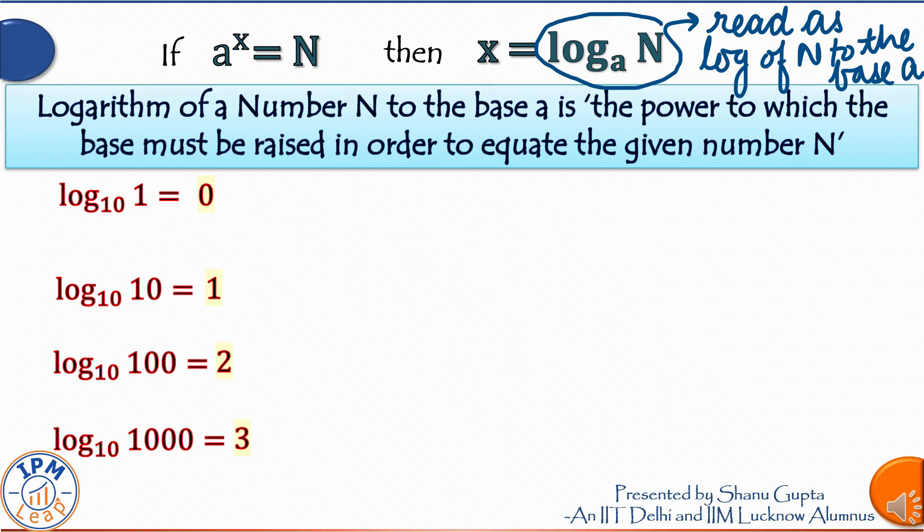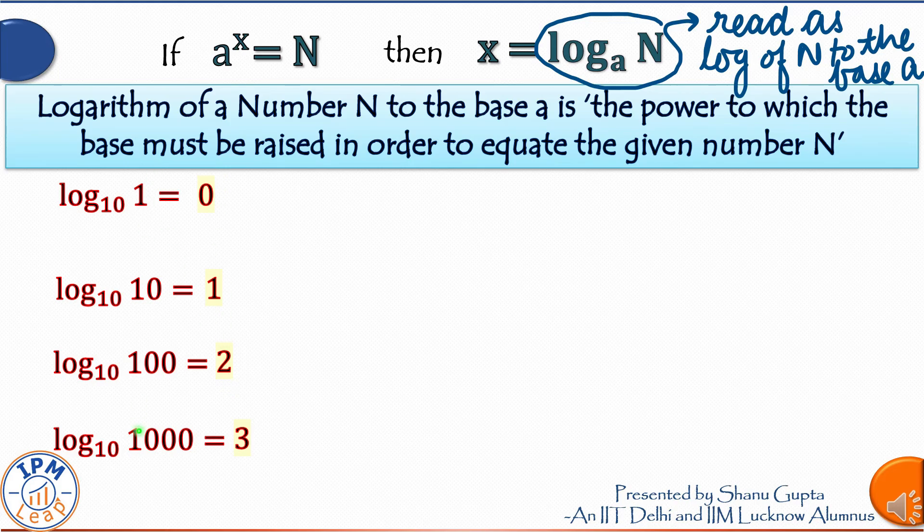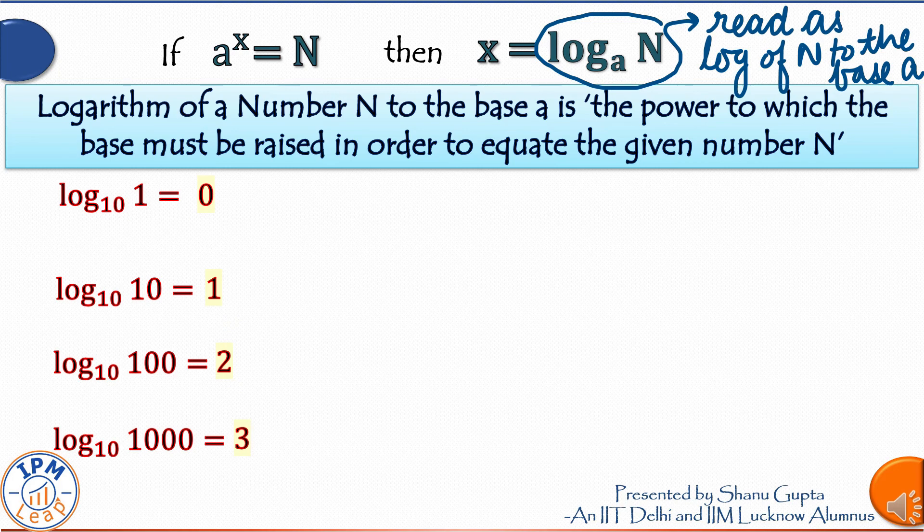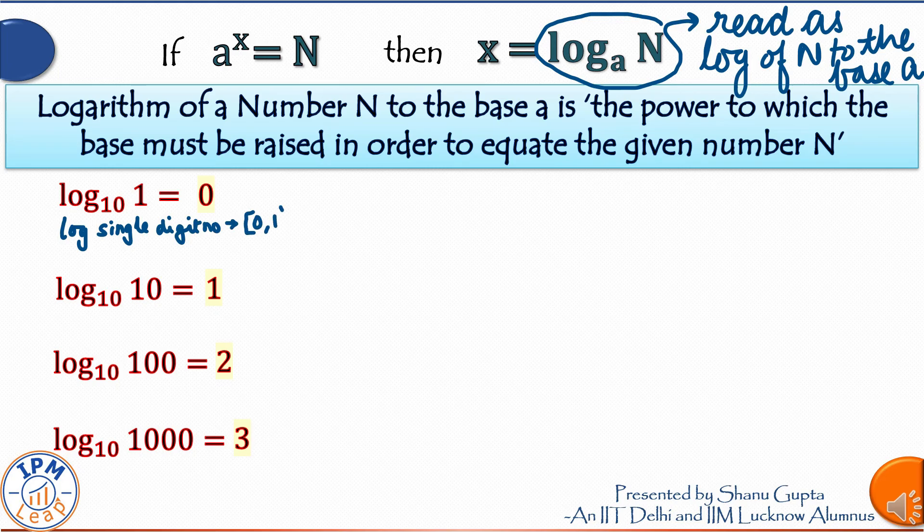So look at the pattern. Even though numbers are increasing exponentially by a digit, the log of these numbers is increasing very slowly. An increase of 1 for an increase of a digit in the number. So logs is a continuous function. Log of any single digit number will always be a value between 0 and 1. They have given you log 2 which is 0.301. It's between 0 and 1.